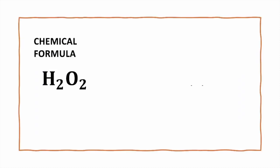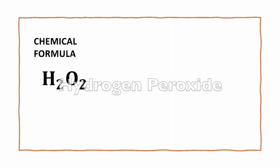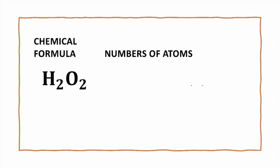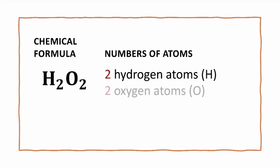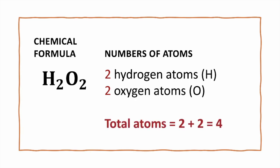Now let's do another one. H2O2 is different than H2O — this is hydrogen peroxide. The subscript 2 to the right of the H means we have two hydrogen atoms, and the subscript 2 to the right of the O means we have two oxygen atoms. If we want to count our total atoms, 2 plus 2 equals 4.